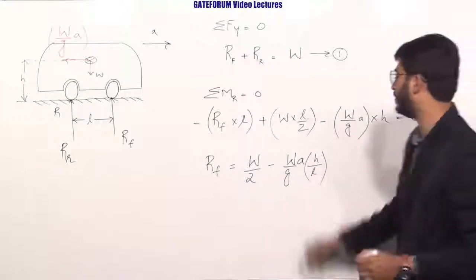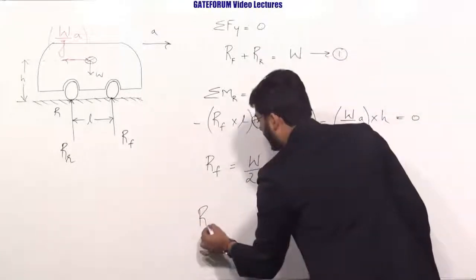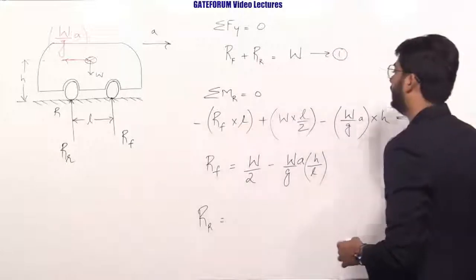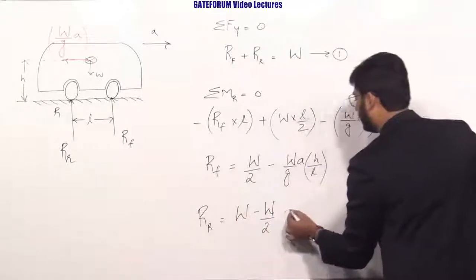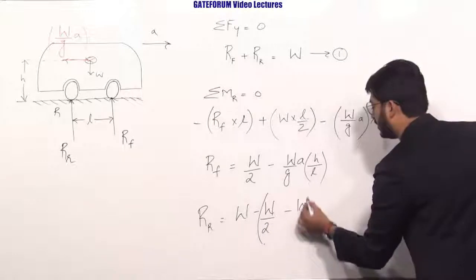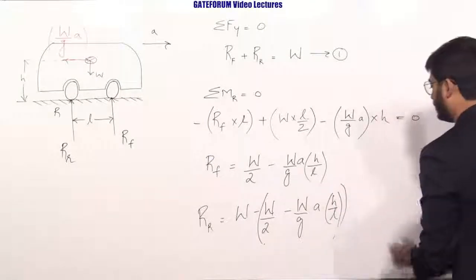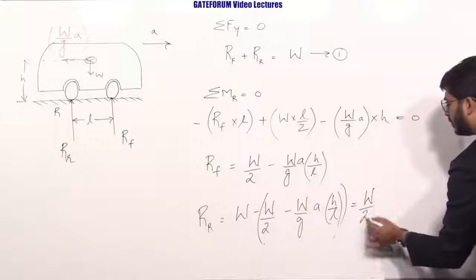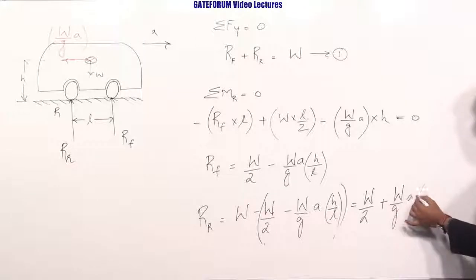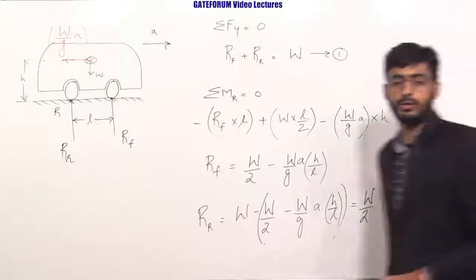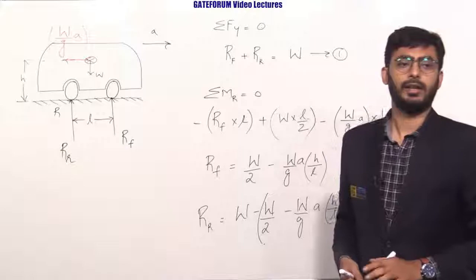The reaction at the front wheel is R_F = W/2 − (W/G) × A × (H/L). The reaction at the rear wheel R_R = W − R_F = W − [W/2 − (W/G) × A × (H/L)] = W/2 + (W/G) × A × (H/L). This corresponds to option D. This is the end of the answer.